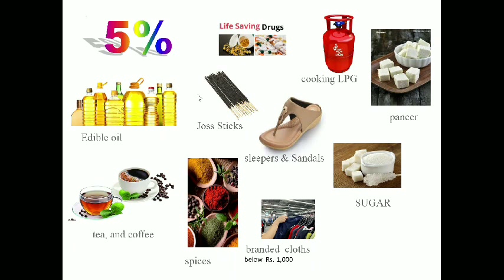The 5% rate applies to more essential needs of human life. For example: life-saving drugs, cooking gas LPG only for domestic purpose, edible oil, tea and coffee, spices, turmeric, chili powder, coriander powder, and some slippers — slippers below ₹500 attract 5% GST. Branded cloth below ₹1000 is also 5% GST, along with sugar, unrefined sugar, and branded paneer.